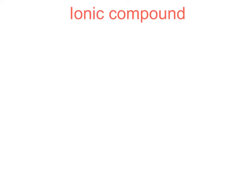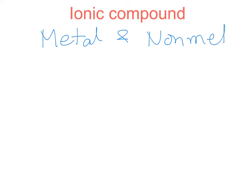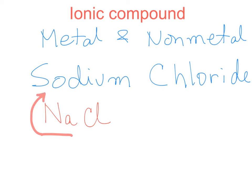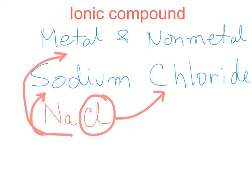If you're talking about ionic compounds, we should know that ionic compounds are compounds made up of a metal and a non-metal. An example of an ionic compound would be sodium chloride. When we write sodium chloride, we write it as NaCl. The Na part is sodium, which is a metal, and the chloride part is a non-metal.